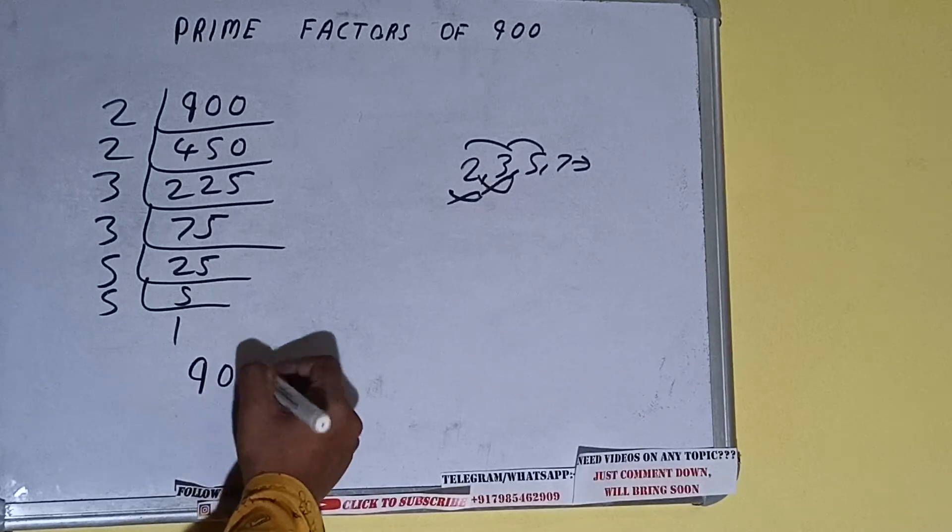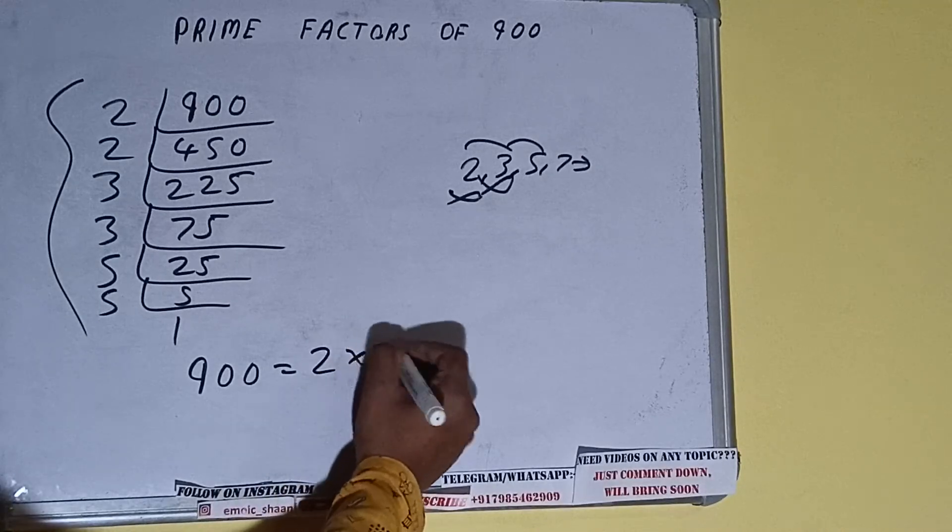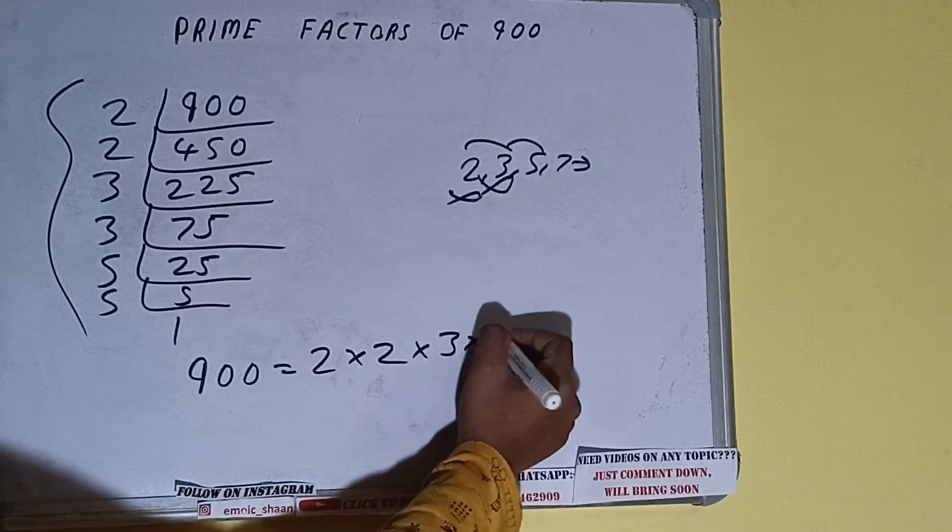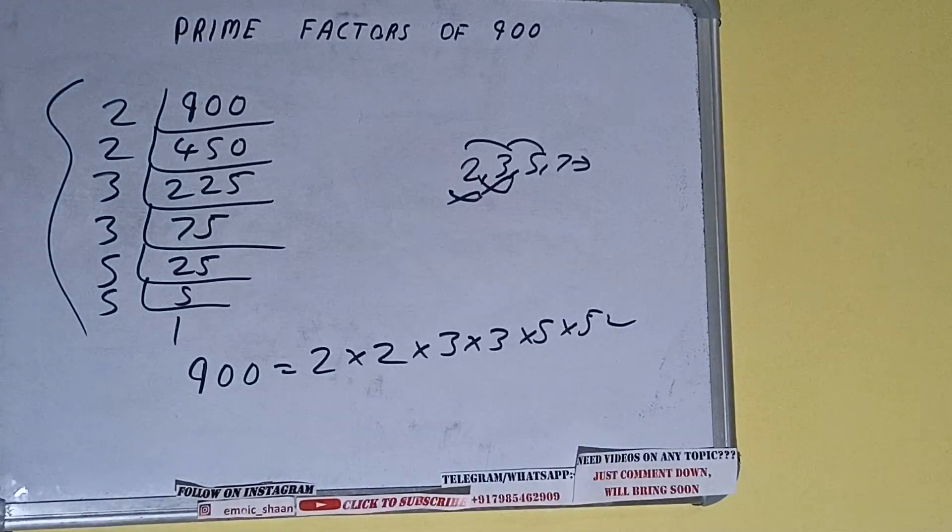That is, prime factors of 900 equals multiply whatever we have on the left hand side. That is 2 × 2 × 3 × 3 × 5 × 5. That will be the answer.